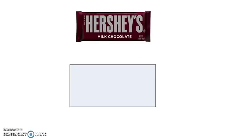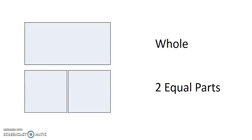We will use a rectangle to represent a candy bar. First, let's partition the candy bar into two equal parts. Equal parts mean the same size. When we partition or divide the whole object into two parts, how many equal parts make a whole candy bar or rectangle? Two equal parts make one whole object.